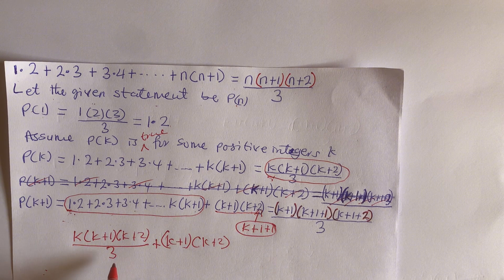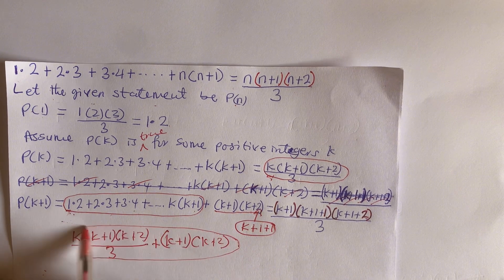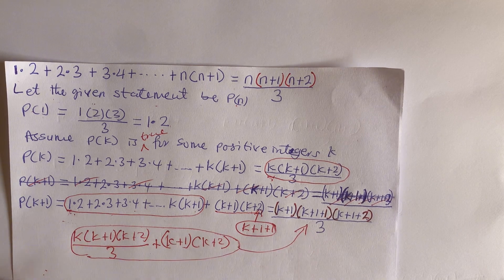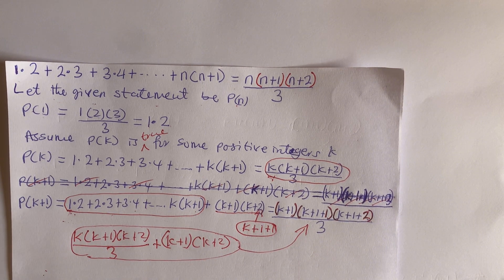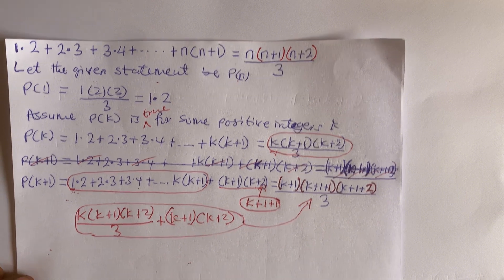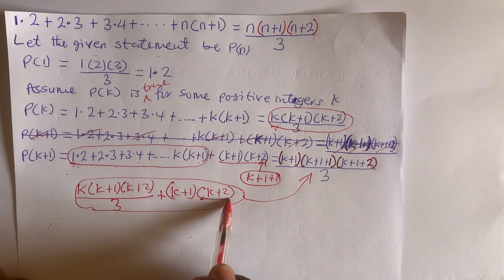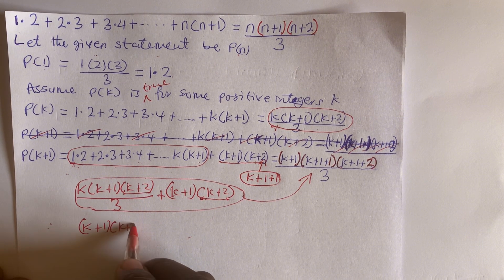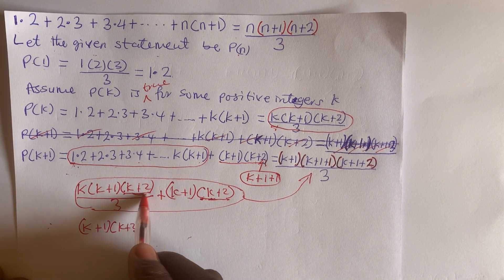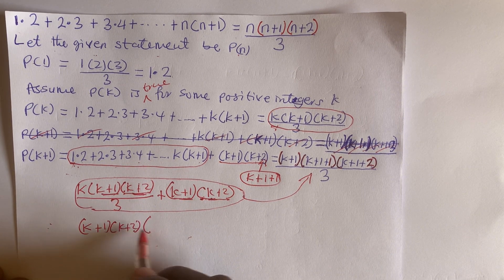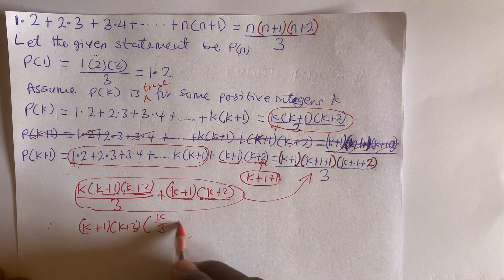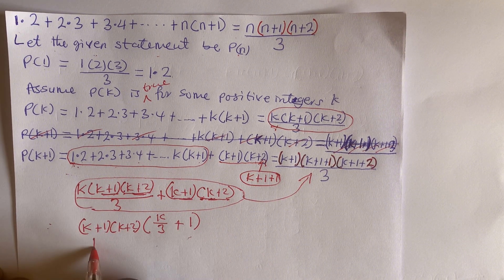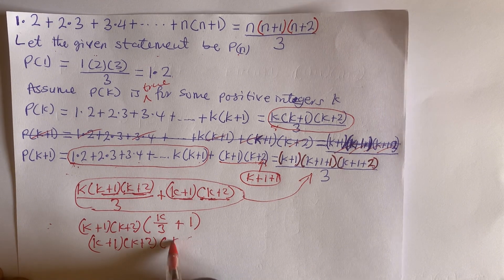Now we have to simplify this expression. We can see that both terms contain (k+1) and (k+2), so we factorize (k+1)(k+2) out. This leaves k/3 + 1 inside the bracket, which gives us (k+1)(k+2)(k+3) divided by 3.